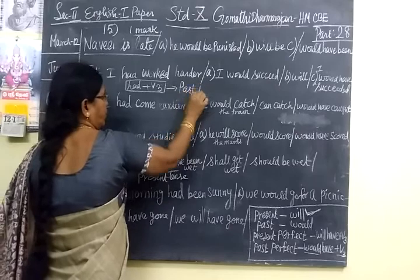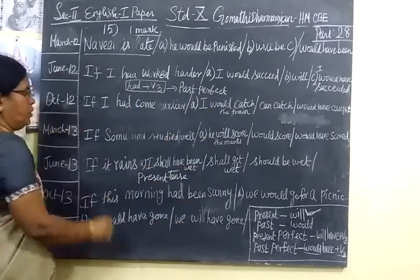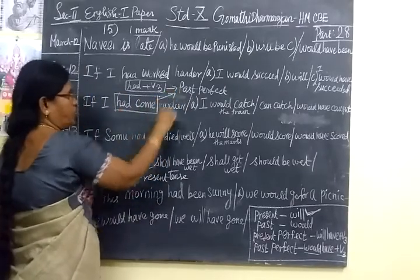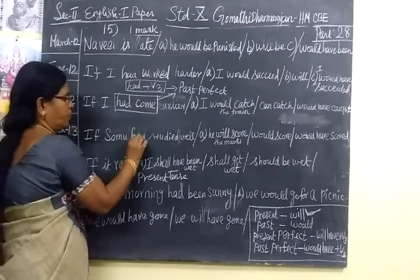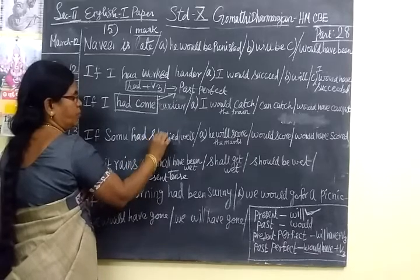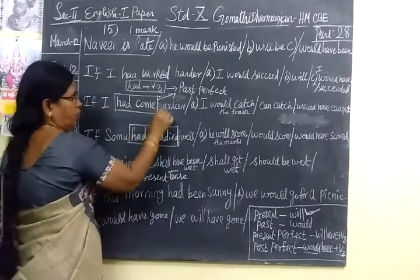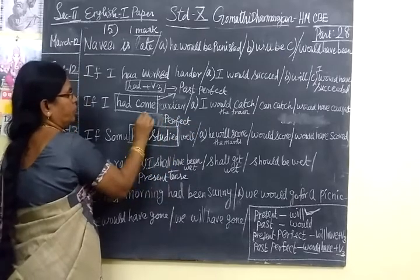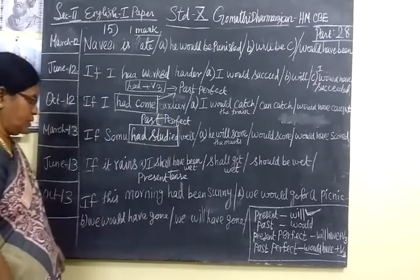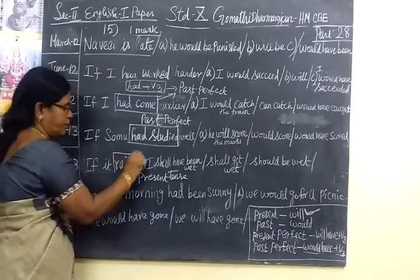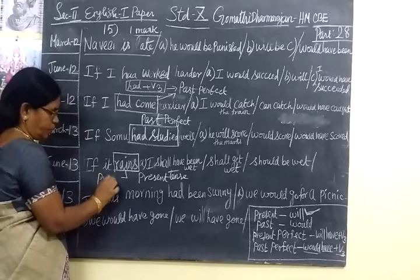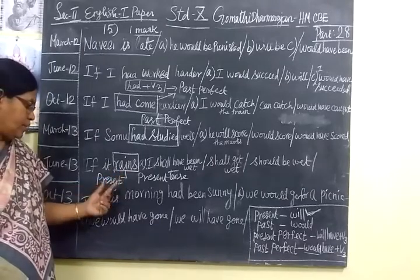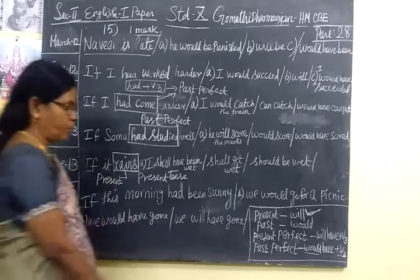This is past perfect — 'had + verb 3.' Now looking at the example: here the word 'reigns' appears. 'Reign' is present tense — a verb ending in 's' is known as present tense. If it reigns, this is in present form. So for present form, you choose 'will.'